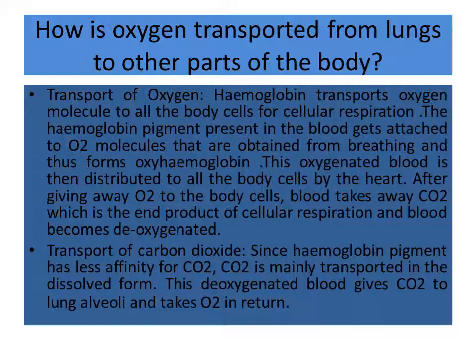How is oxygen transported from the lungs to other parts of the body? In our body, there are red blood cells. Hemoglobin transports oxygen to all the body cells for cellular respiration. The hemoglobin pigment present in the blood gets attached to oxygen molecules obtained from breathing, thus forming oxyhemoglobin. This oxygenated blood is then distributed to all the body cells by the heart through pumping of the blood.